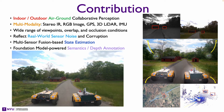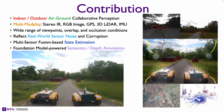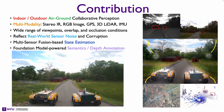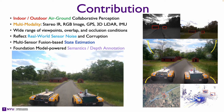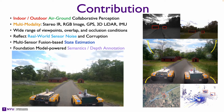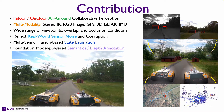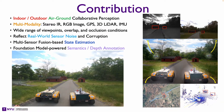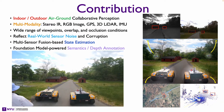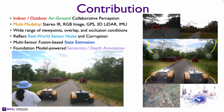We propose an indoor-outdoor air-ground collaborative perception dataset, which covers a wide range of viewpoints, overlap, and occlusion conditions, and also reflects real-world sensor noise and corruption.